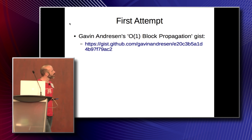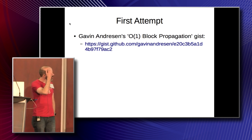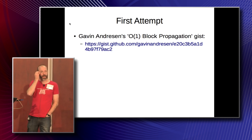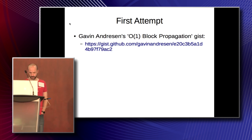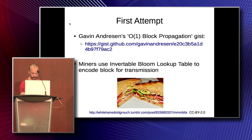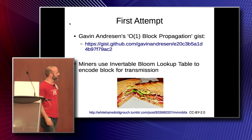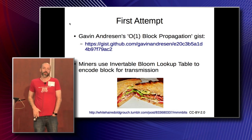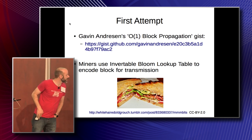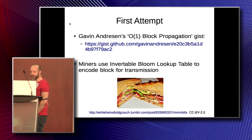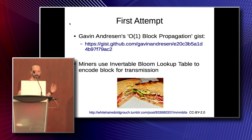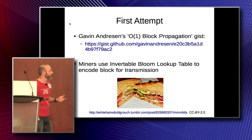The first part of this was Gavin's O(1) block propagation gist, which gives you the URL there. It uses an IBLT. I Googled image search for IBLT and that's what I got — obviously, internet bacon lettuce tomato. So: invertible bloom lookup table, to encode a block for transmission.